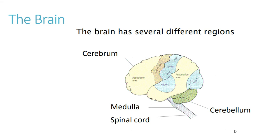There's also the cerebellum, or 'little brain,' which sits right at the base and is responsible for things such as coordination, balance, and our motor functions. Finally, we have the medulla, otherwise known as the brain stem. This connects our brain to the spinal cord and is responsible for lots of the primitive life-maintaining functions, such as regulation of the heart rate, the breathing rate, and the sleep cycle — things that we need to stay alive.